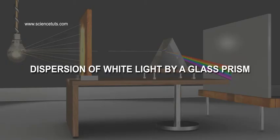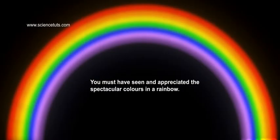Dispersion of White Light by a Glass Prism. You must have seen and appreciated the spectacular colours in a rainbow. How could the white light of the sun give us various colours of the rainbow?